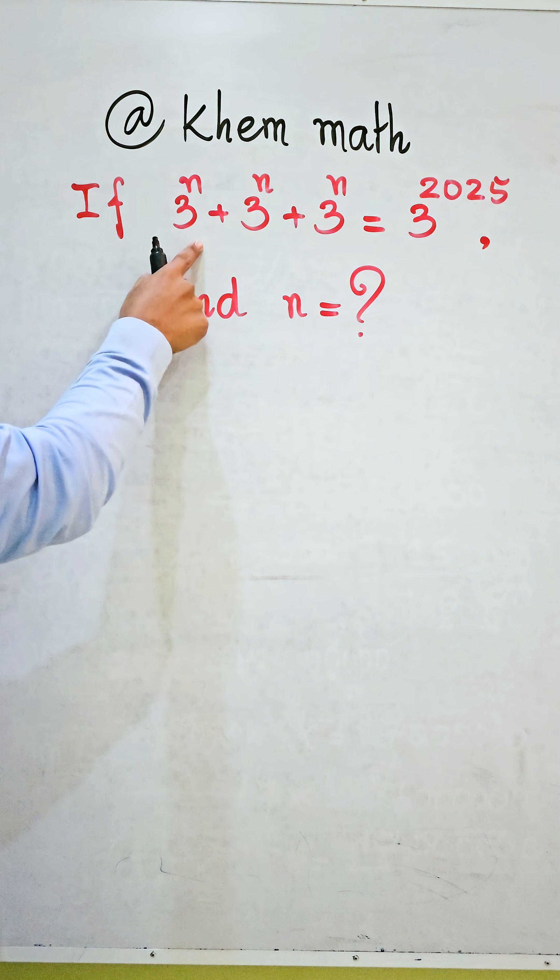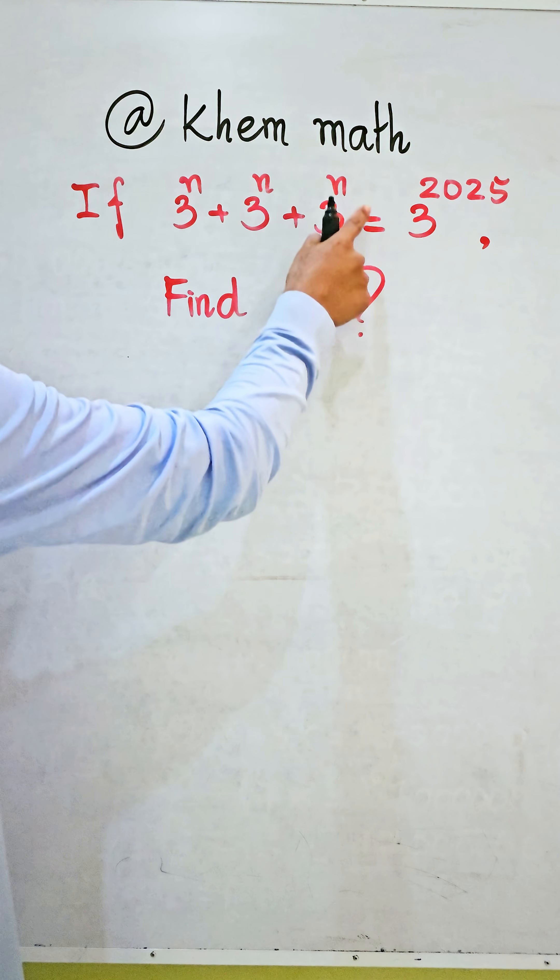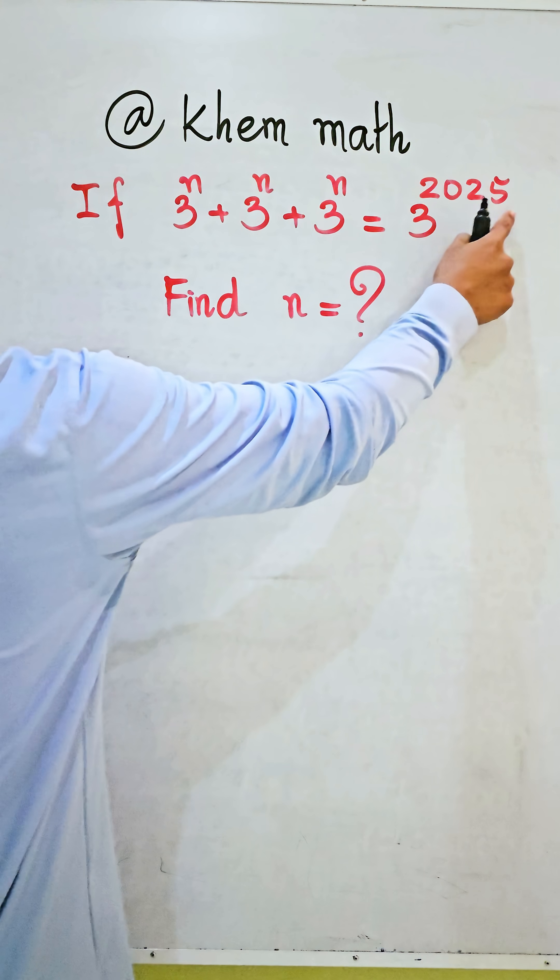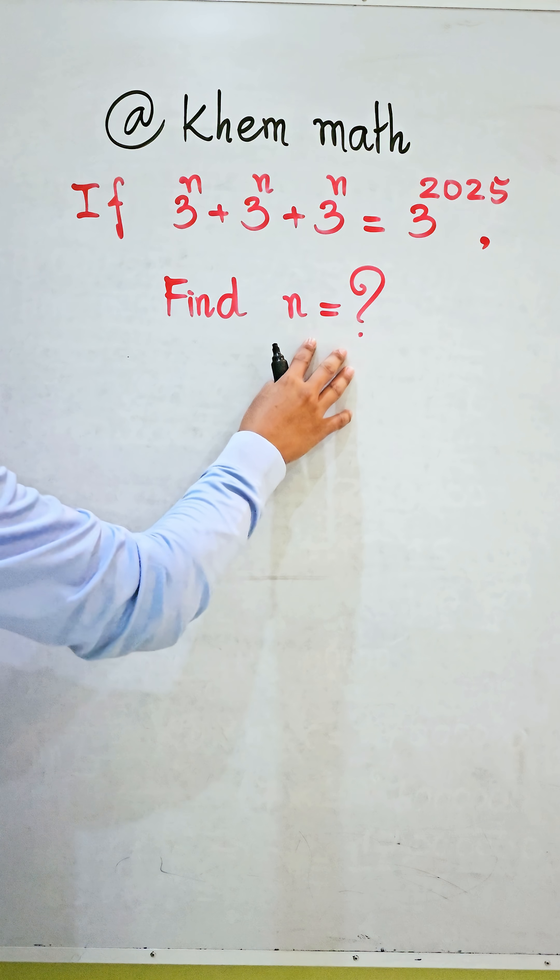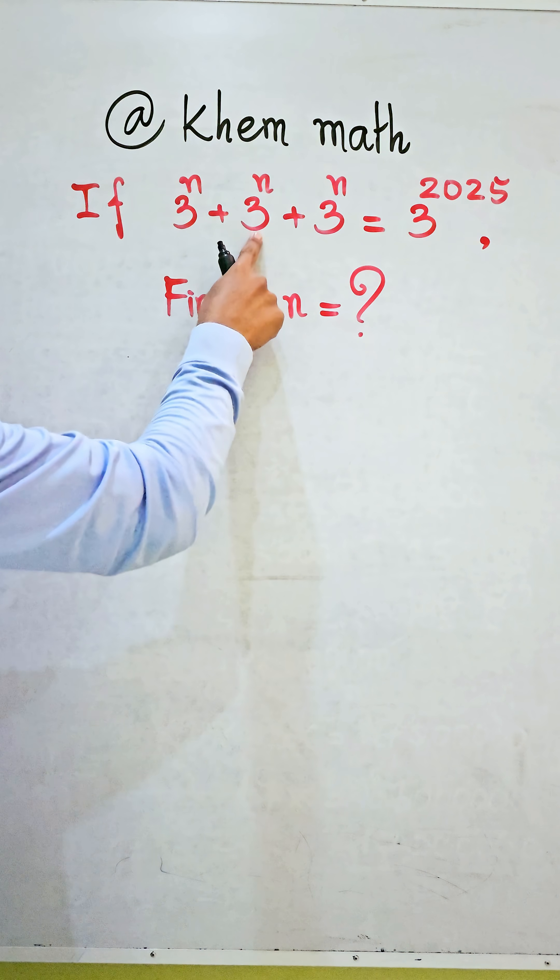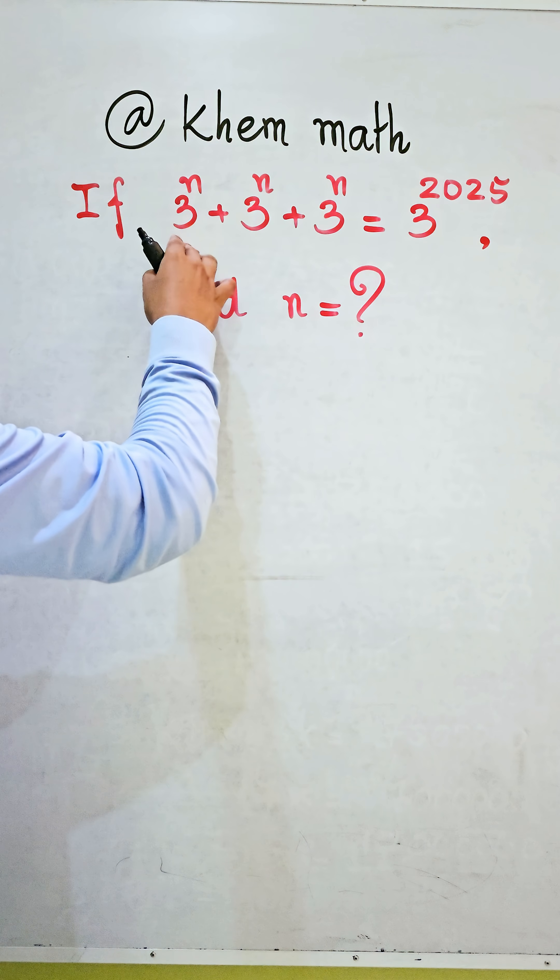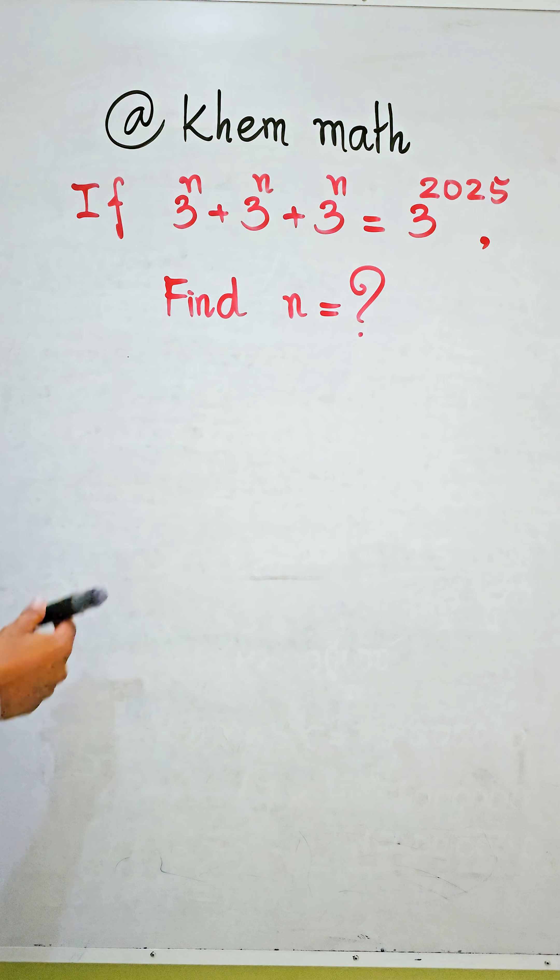If 3 power n plus 3 power n plus 3 power n equals 3 power 2025, find the value of n. Here we have 1, 2, 3 terms, so we take 3 power n as a common factor.